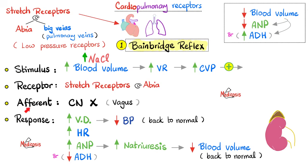When the atrium gets stretched more, afferent fibers are sent through the vagus nerve — because the vagus reaches the heart — up to the central nervous system. Since this is cranial nerve 10, the center has to be in the medulla, because cranial nerves 9, 10, 11, and 12 are connected to the medulla. Which part of the medulla? It's the nucleus tractus solitarius, yet again.